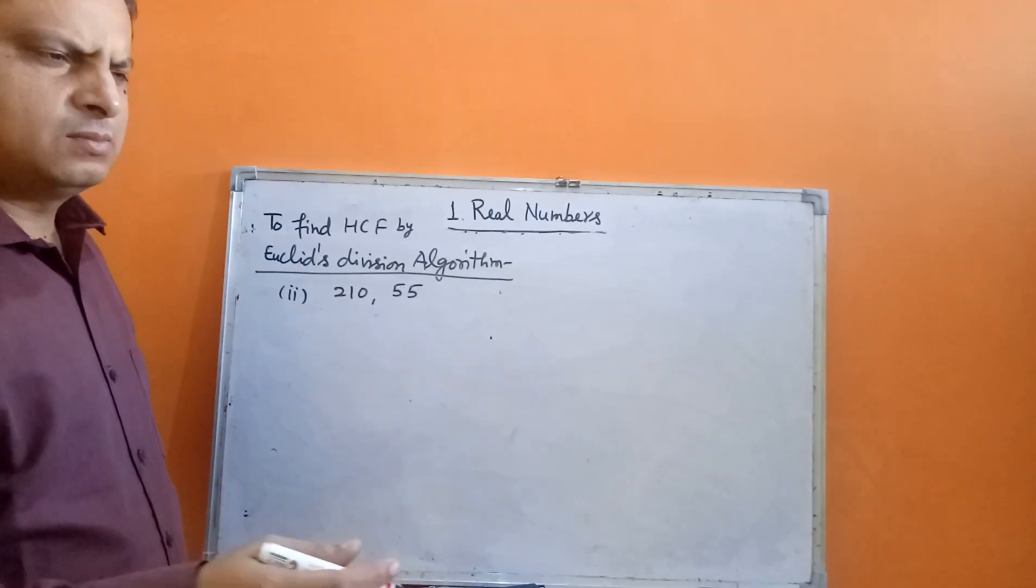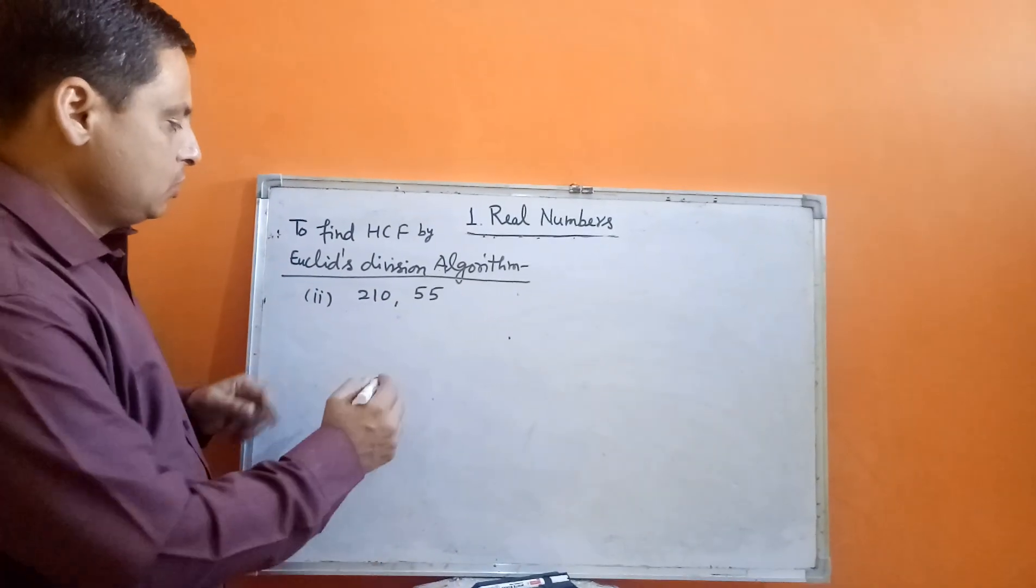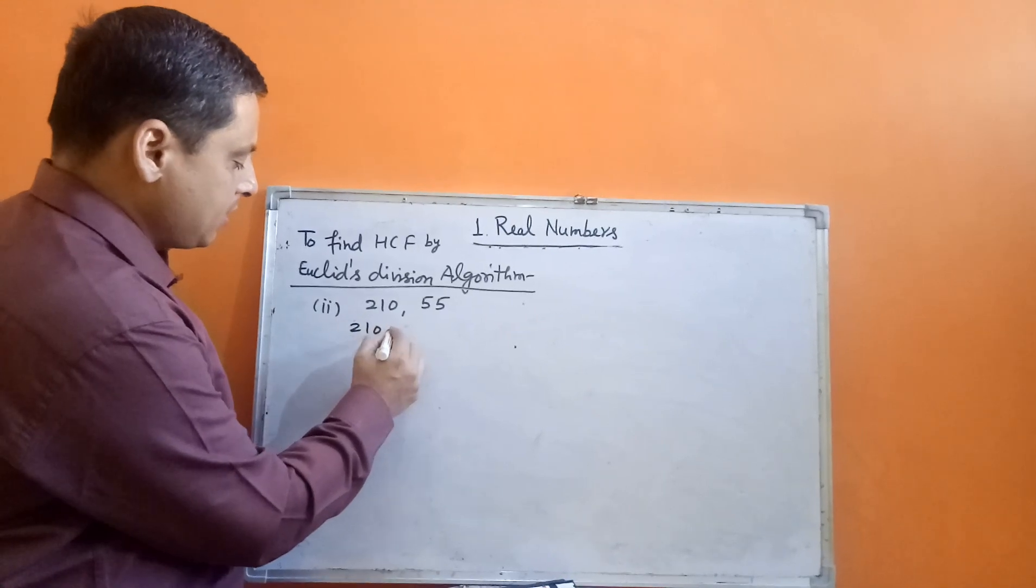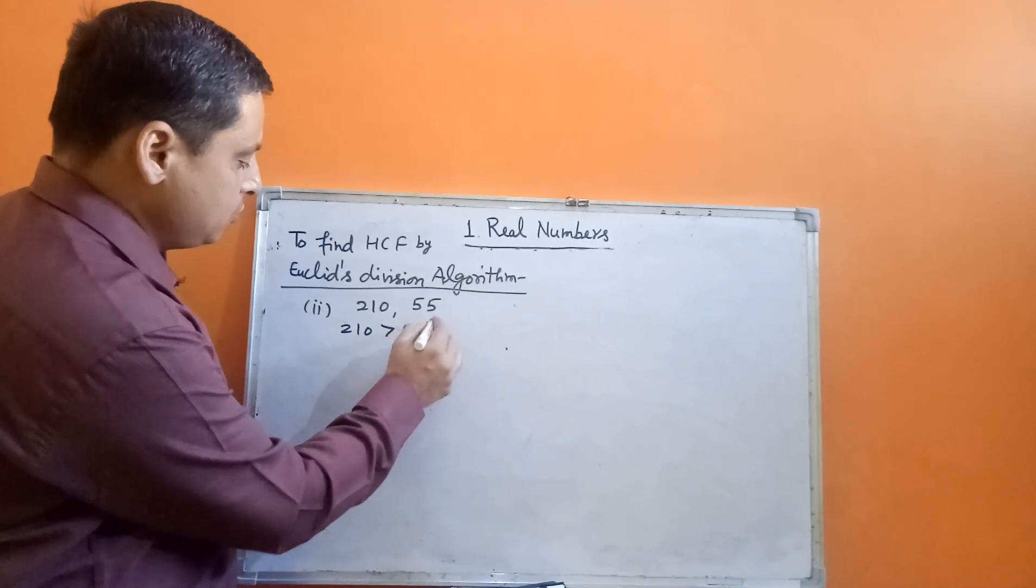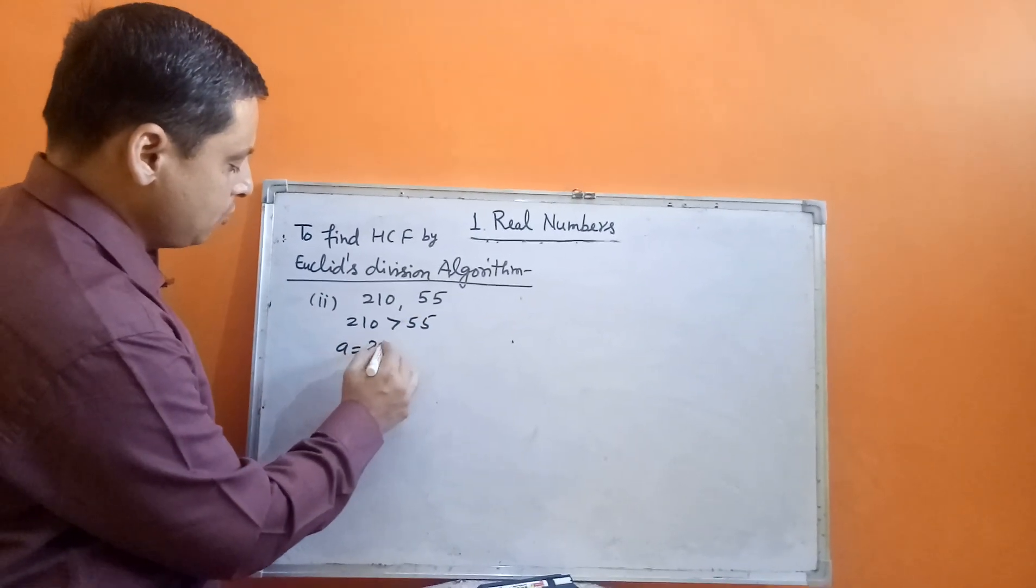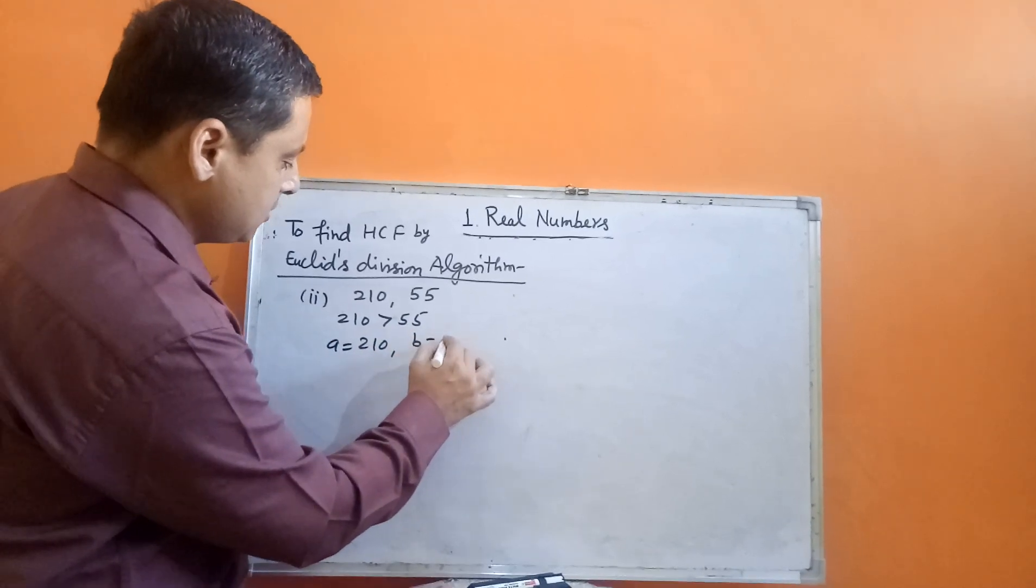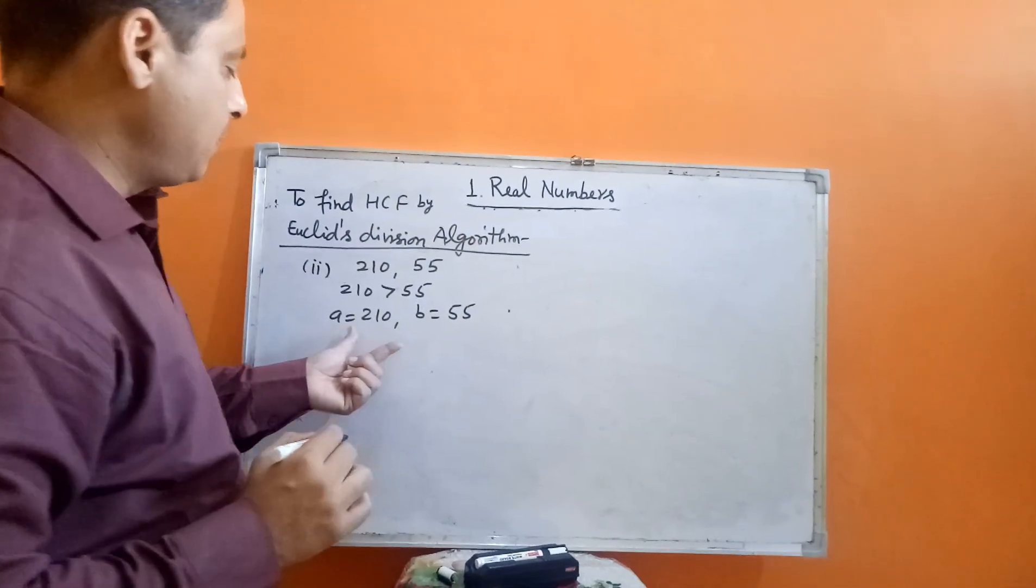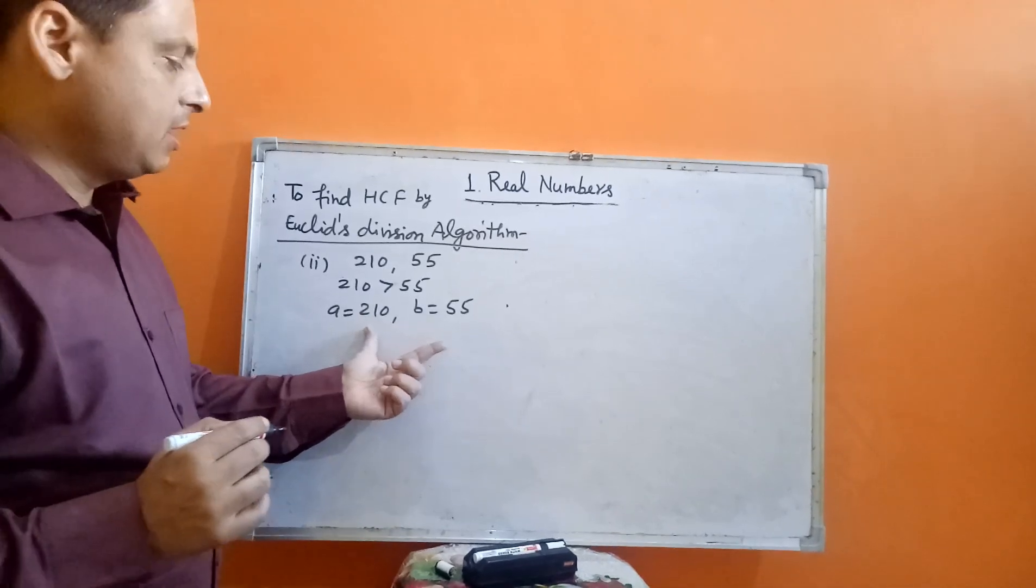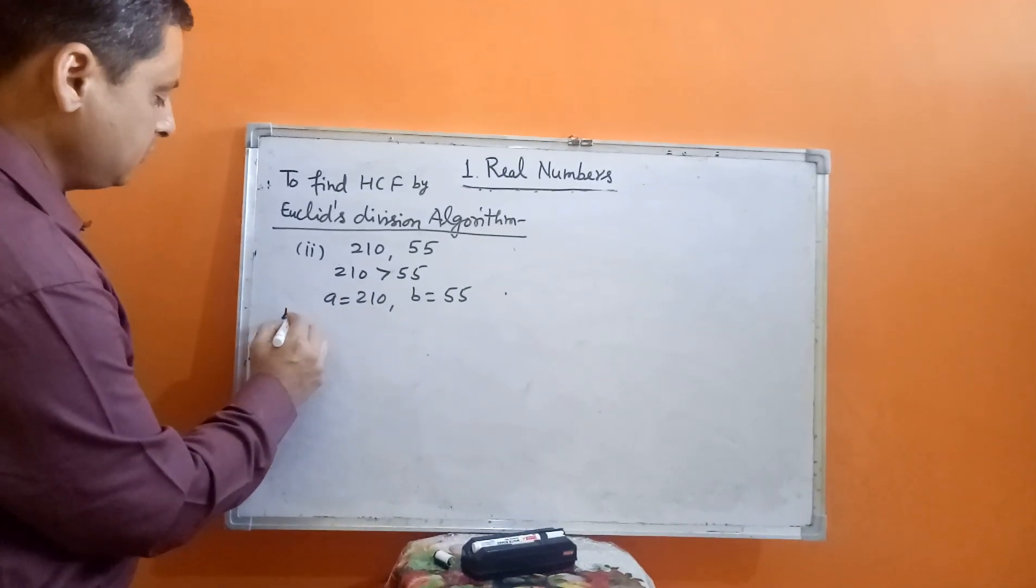Next, we will take 210 and 55. Here, 210 is greater than 55, so we will take A as 210 and B as 55. Now, we will apply Euclid's division algorithm on 210 and 55.